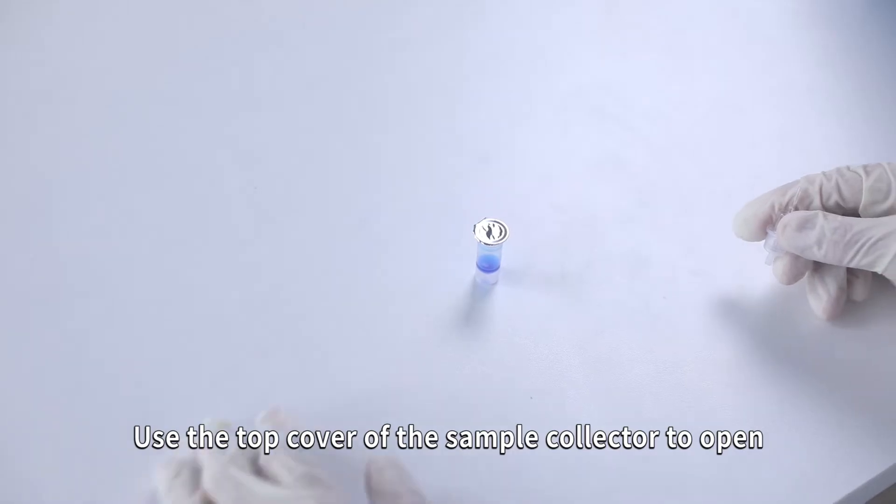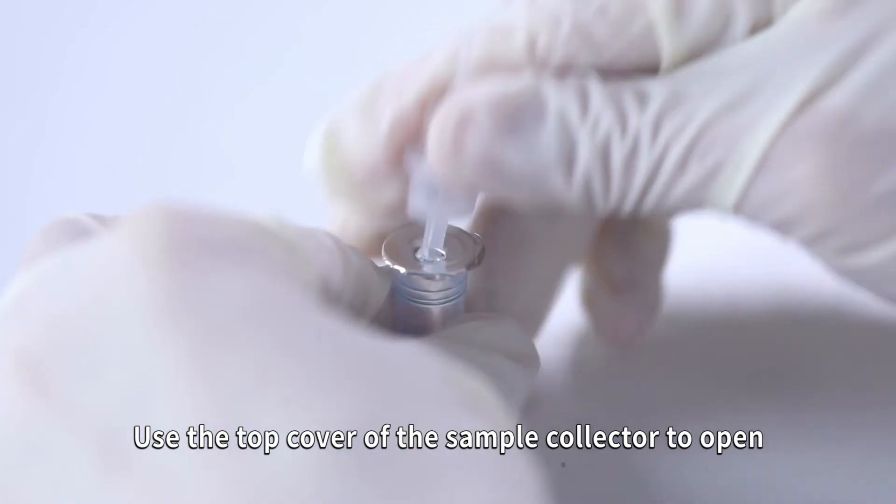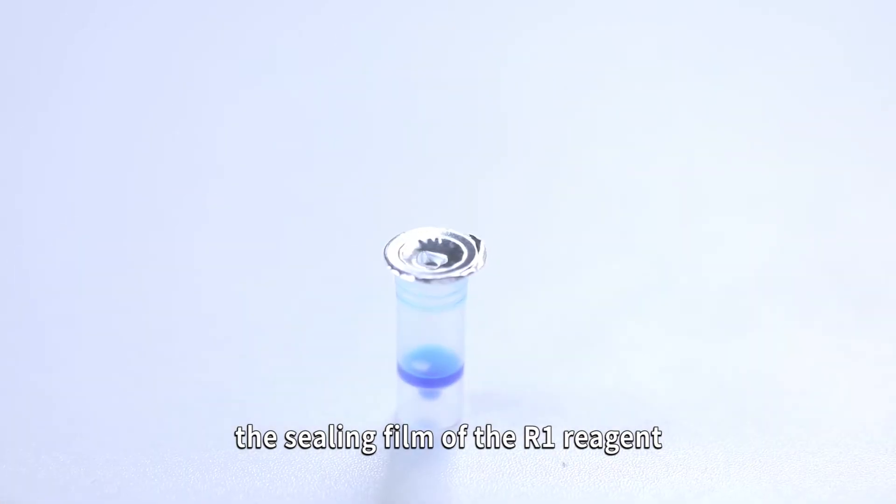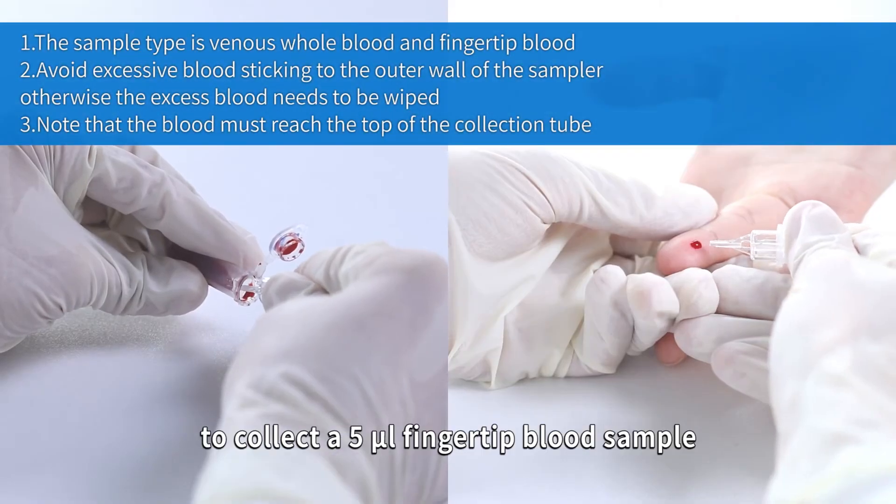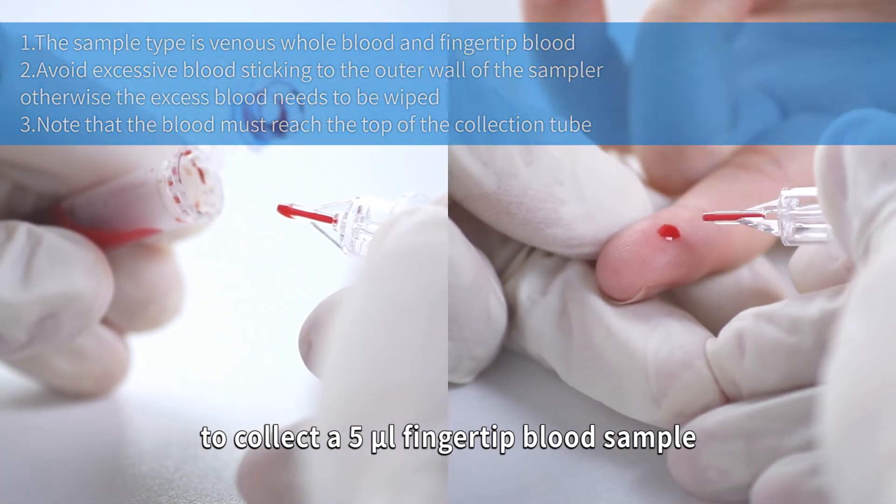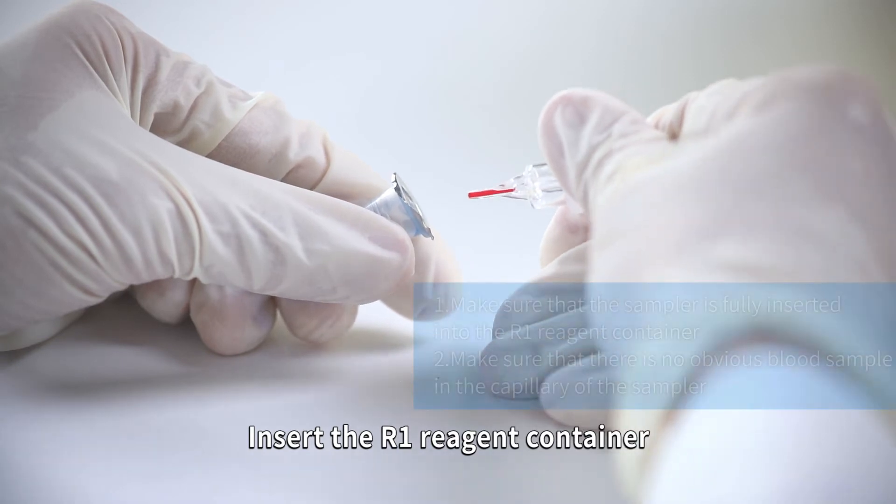Use the top cover of the sample collector to open the sealing film of the R1 Reagent. Use the sample collector to collect a 5-microliter fingertip blood sample, and insert it into the R1 Reagent container.